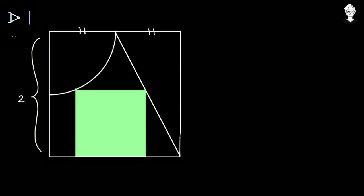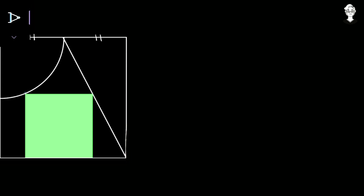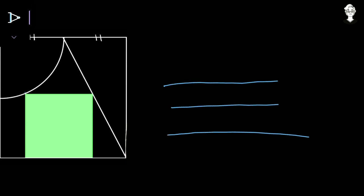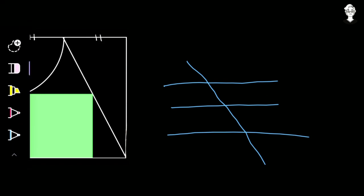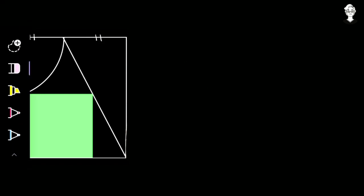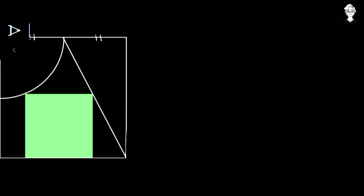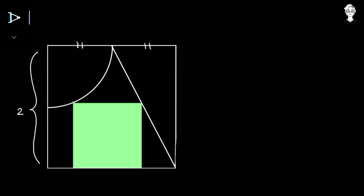First of all, if two or three lines are parallel to each other, then any line that cuts those parallel lines is named as a transversal. We can then use the properties of parallel lines and the transversal — that is, alternate interior angles, corresponding angles, and co-interior angles.